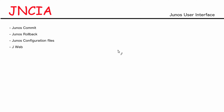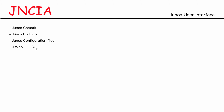In this video, we're going to focus on these topics. We're going to start by taking a look at the Junos Commit model, then follow it up with the Junos Rollback model. We'll also understand Junos configuration files, and finally we'll spend some time talking about J-Web. So let's begin with the Junos Commit model.